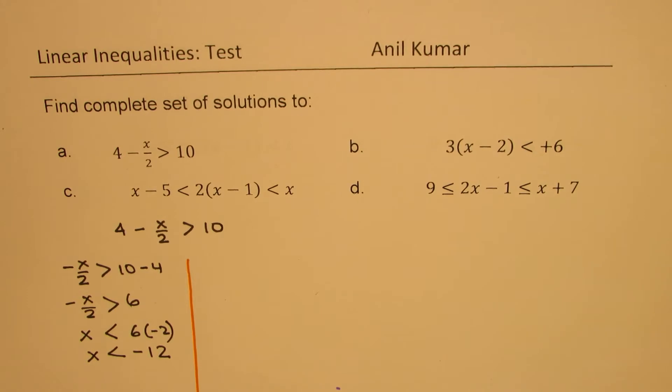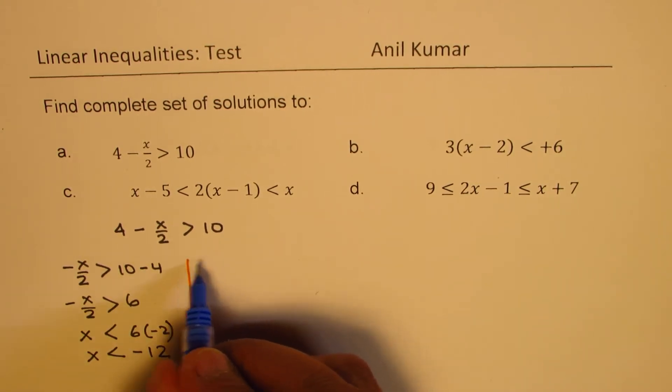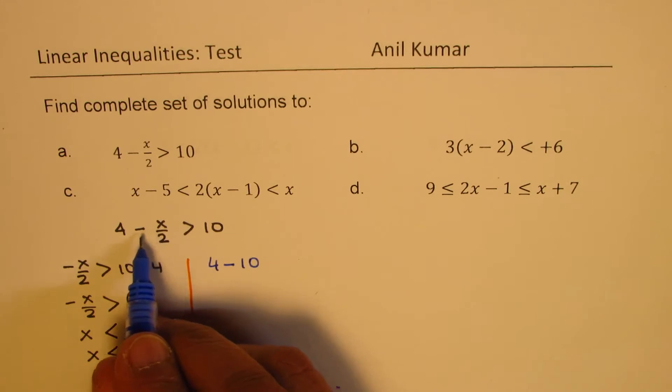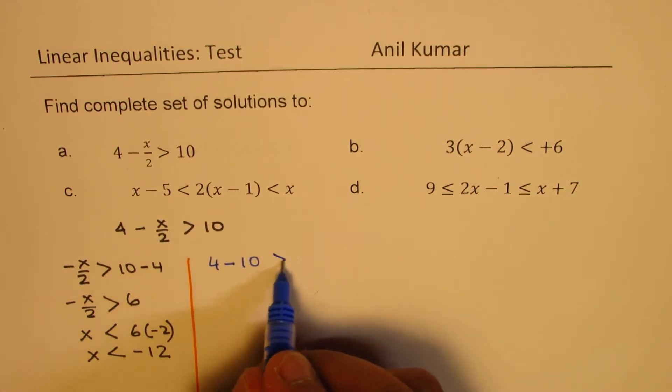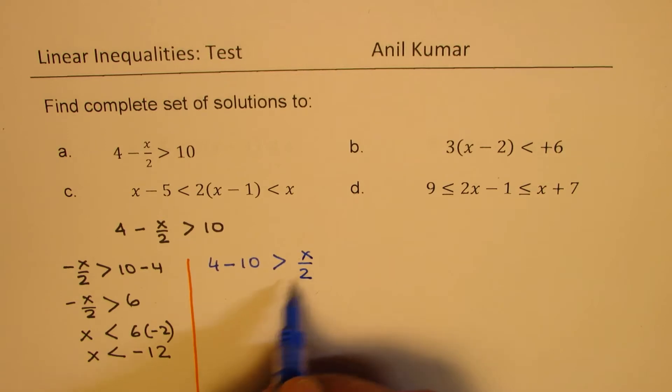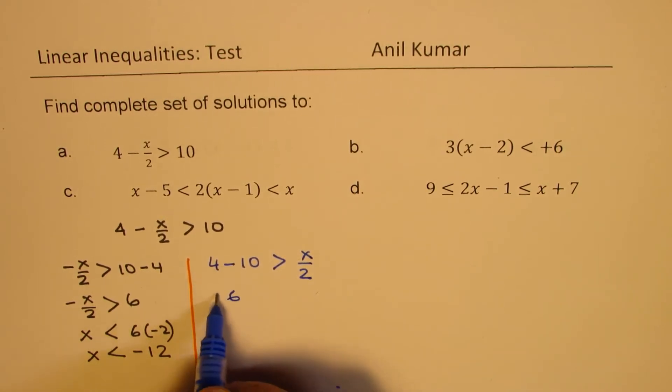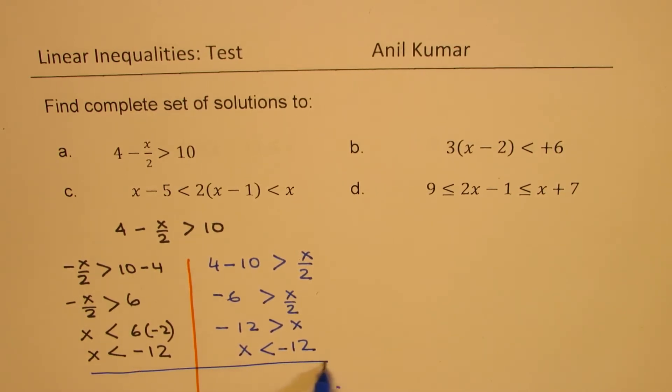Another method could be that you take this minus on the right side so that you don't get trapped in that step. So the alternate method could be we can bring 10 to this side. So we get 4 minus 10 and bringing x by 2 on the right side is greater than x by 2. Which is 6 with a negative sign should be greater than x by 2. So that means minus 12 is greater than x, or you can say x is less than minus 12. So either way the result is same.